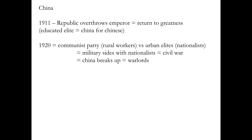By 1920 you get the Communist Party, made up of rural workers talking about income inequality — just like the anti-capitalists in Kansas we talked about in the last episode. The same feeling: why is the best land owned by a small percentage of people, and why do these urban elites have even more money than the rural elites? Why can't we all just be equal? So increasingly you have a Communist Party organizing rural workers versus the urban elites, who make up the Nationalist Party. The military sides with the Nationalists, and that creates civil war. China breaks up into lots of pieces.